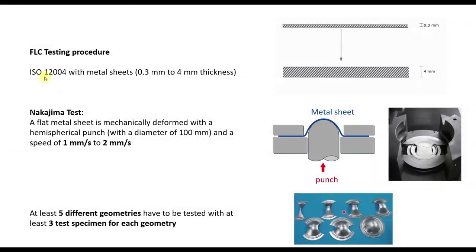According to the DIN ISO 12004 we need at least 5 different geometries like shown here. For example uniaxial tension, plane strain and biaxial tension and the geometries in between. And for each geometry we need at least 3 specimens.